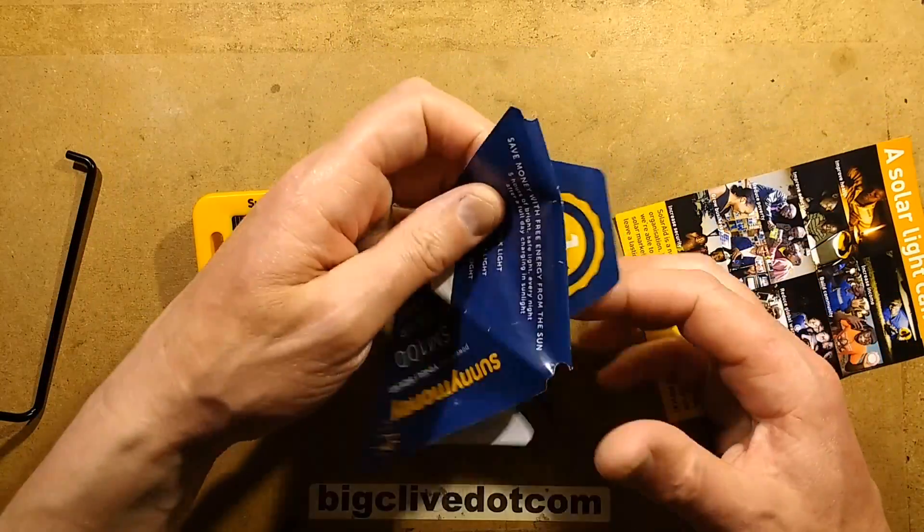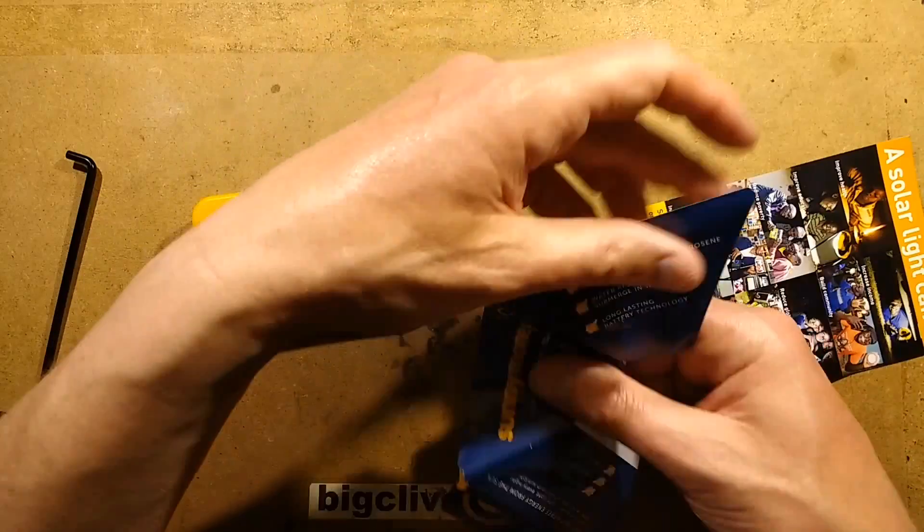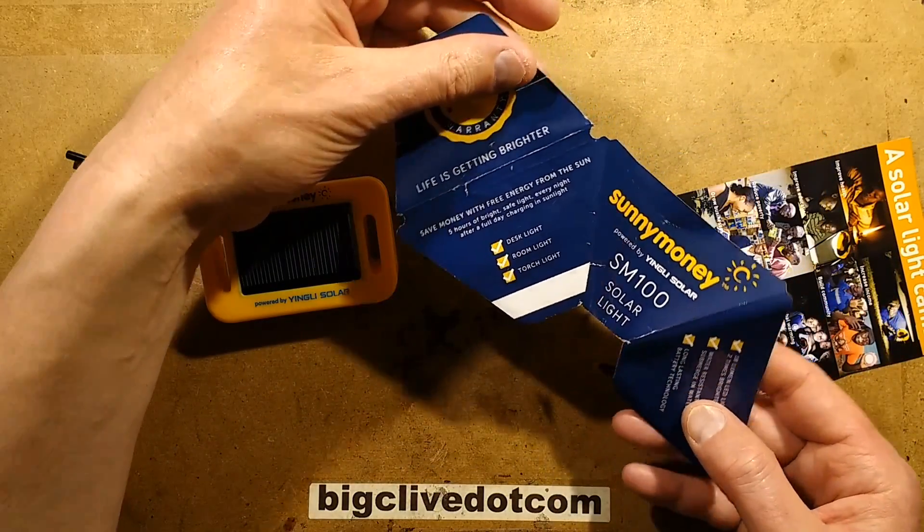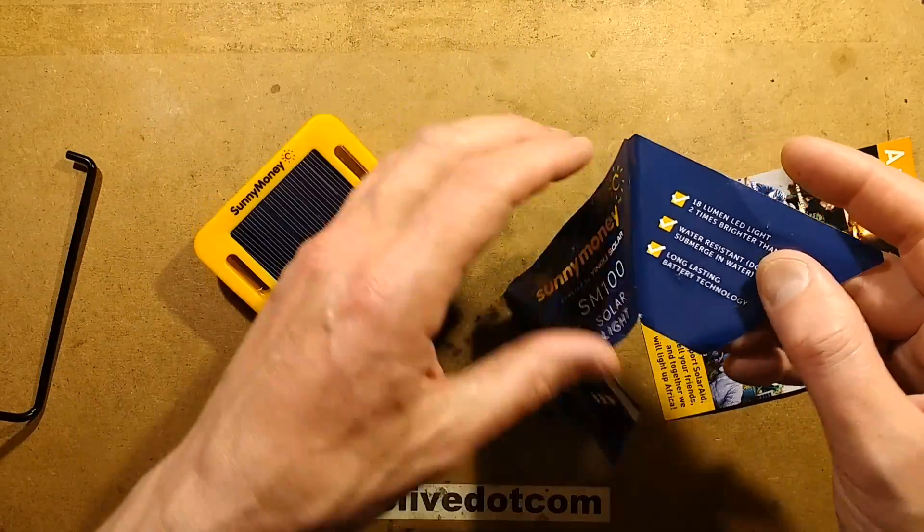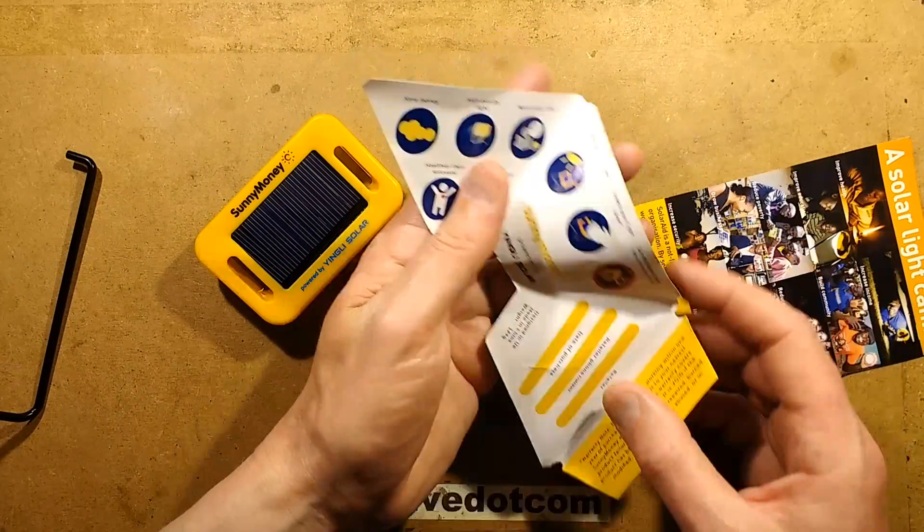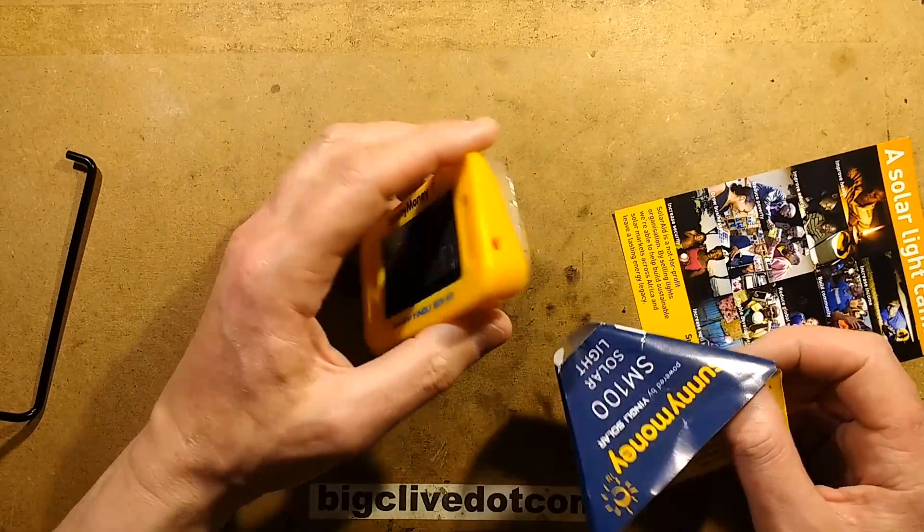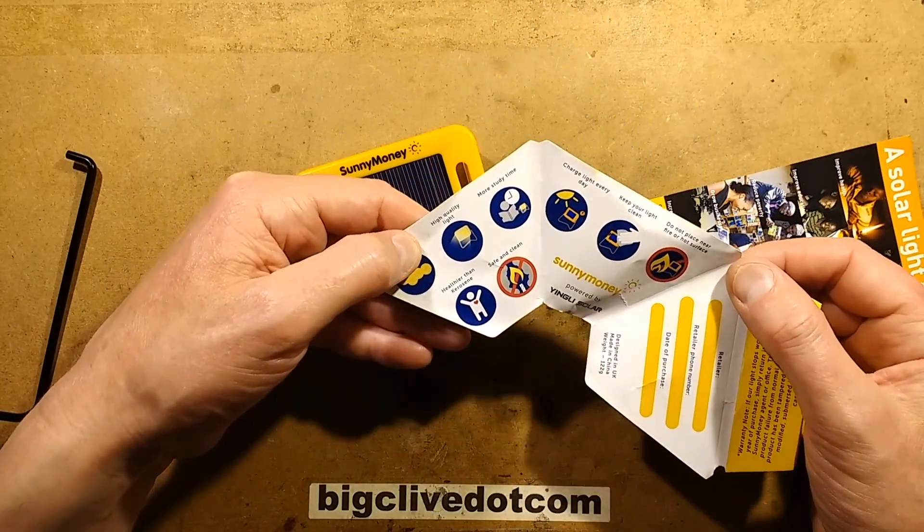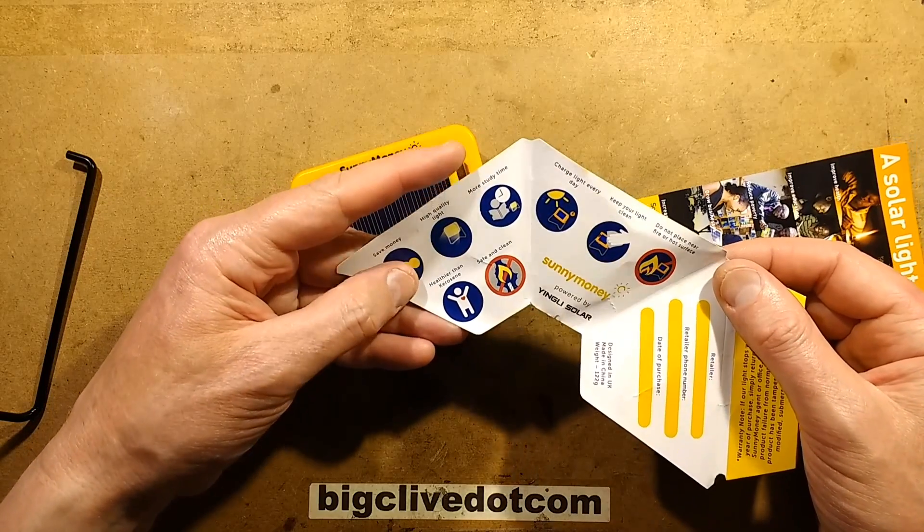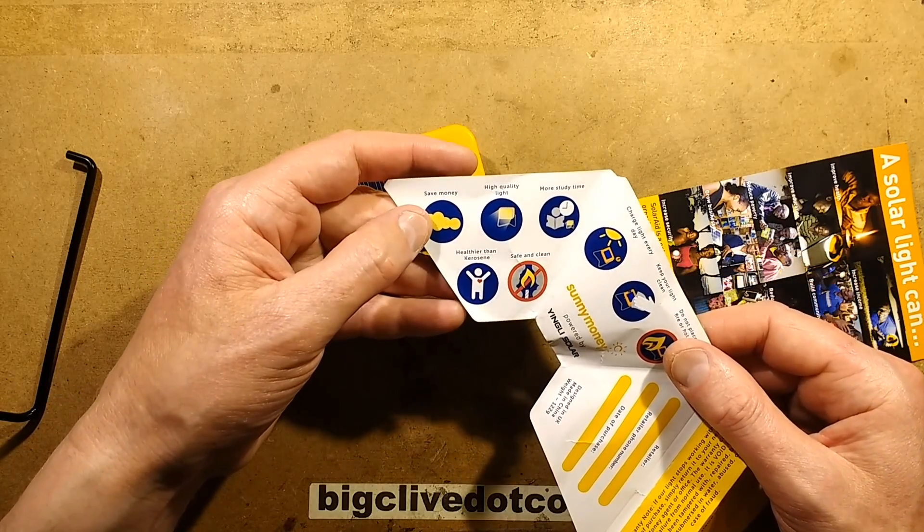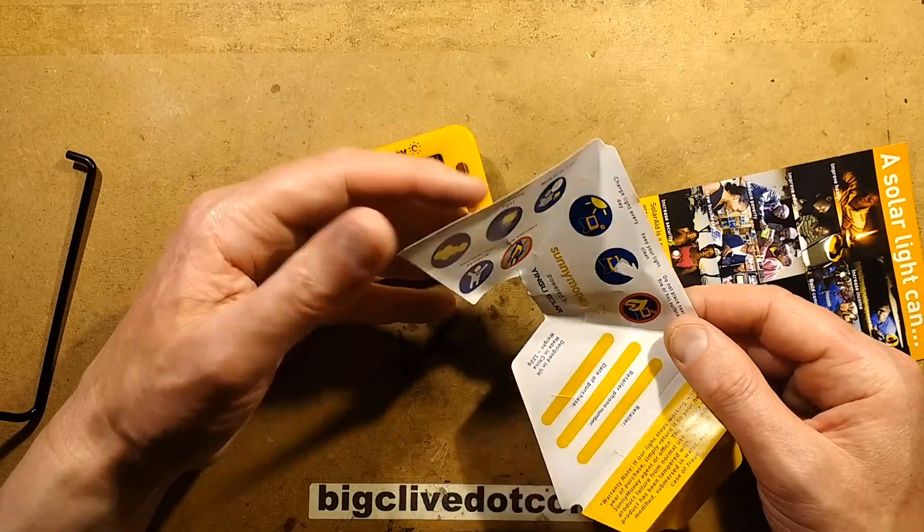It comes with this little slip. Sunny Money, Yingli Solar, save money with free energy from the sun. Water resistant, do not submerge in water. Keep your light clean, charge light every day, do not place near fire or hot surface. More study time, high quality light, save money, healthier than kerosene, safe and clean.